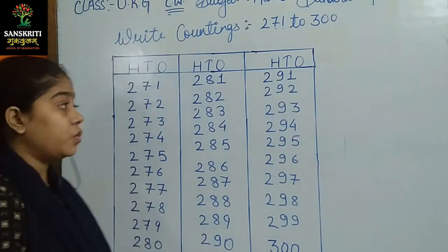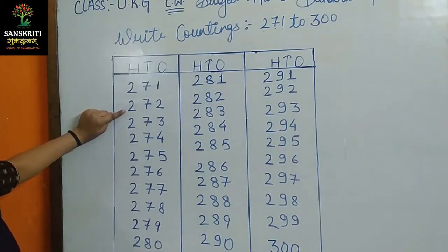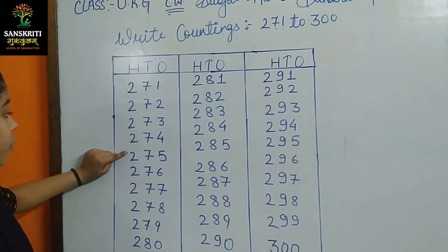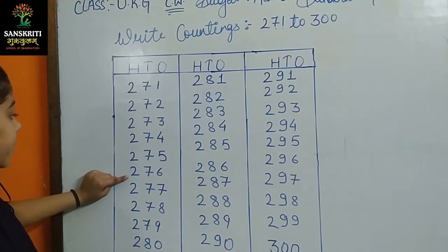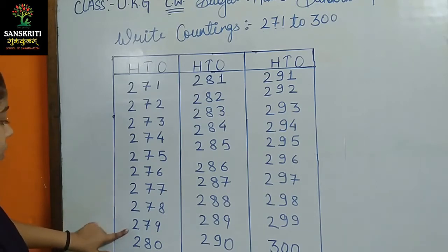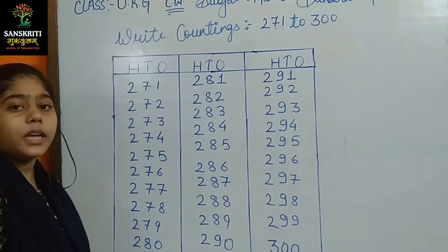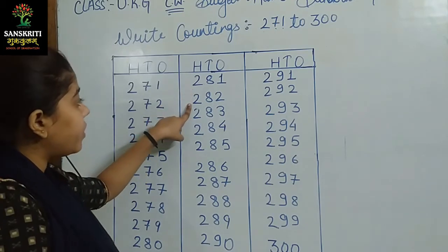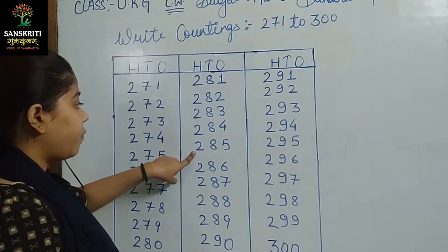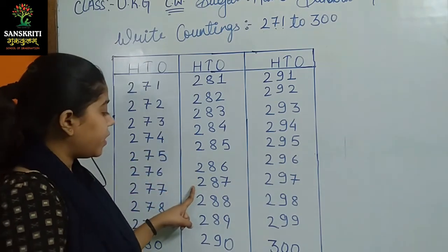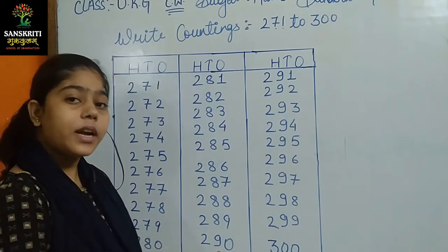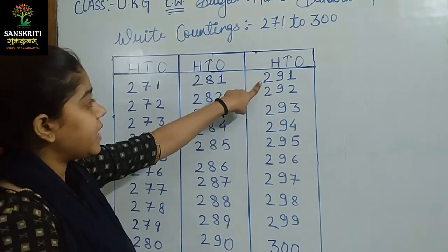चलिए, मैं आपको फिर से बताती हूं। 271, 272, 273, 274, 275, 276, 277, 278, 279, 280, 281, 282, 283, 284, 285, 286, 287, 288, 289, 290.